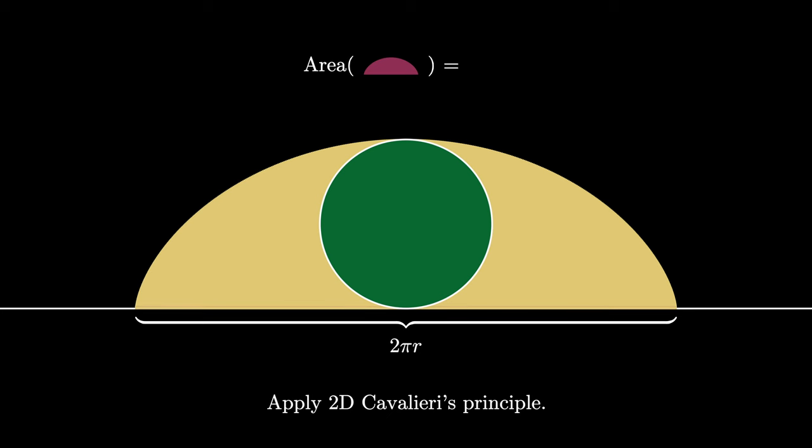We apply the two-dimensional Cavalieri's principle. To do this, we will go along each of the two symmetric shapes on either side of this circle, and we will take the width of the shape at a given point and shift it over to the left as shown here.